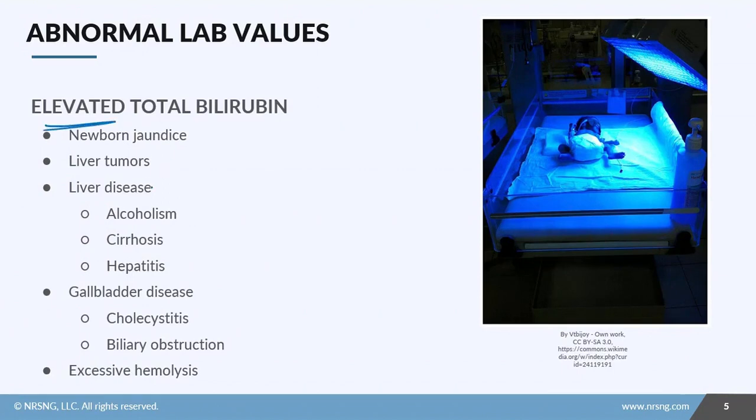With patients that have elevated total bilirubin, you're going to suspect some sort of liver disease, whether it's alcoholic cirrhosis or some sort of viral or infectious hepatitis. They could have a liver tumor. Also look at the cause being some sort of gallbladder issue, maybe cholecystitis or potential biliary obstruction.